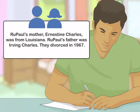Detail the person's parents. Include the names of the person's parents, as well as any guardians or adoptive parents. Discuss any key biographical details of the person's parents. You can also mention if the parents divorced or separated. For example, you may write: RuPaul's mother, Ernestine Charles, was from Louisiana. RuPaul's father was Irving Charles. They divorced in 1967.